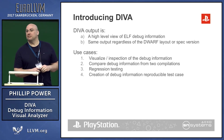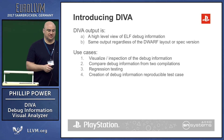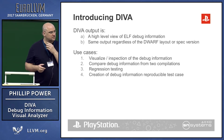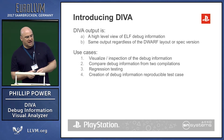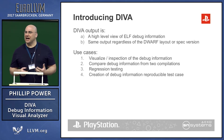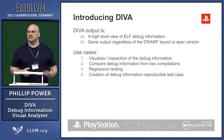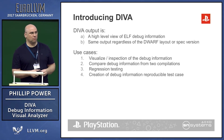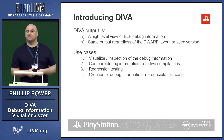So Diva transforms from the low-level to a high-level representation. One of the key features of Diva is that the output is the same regardless of what DWARF format you use — either version 2, 3, or 4 — and what the layout within the ELF file is.